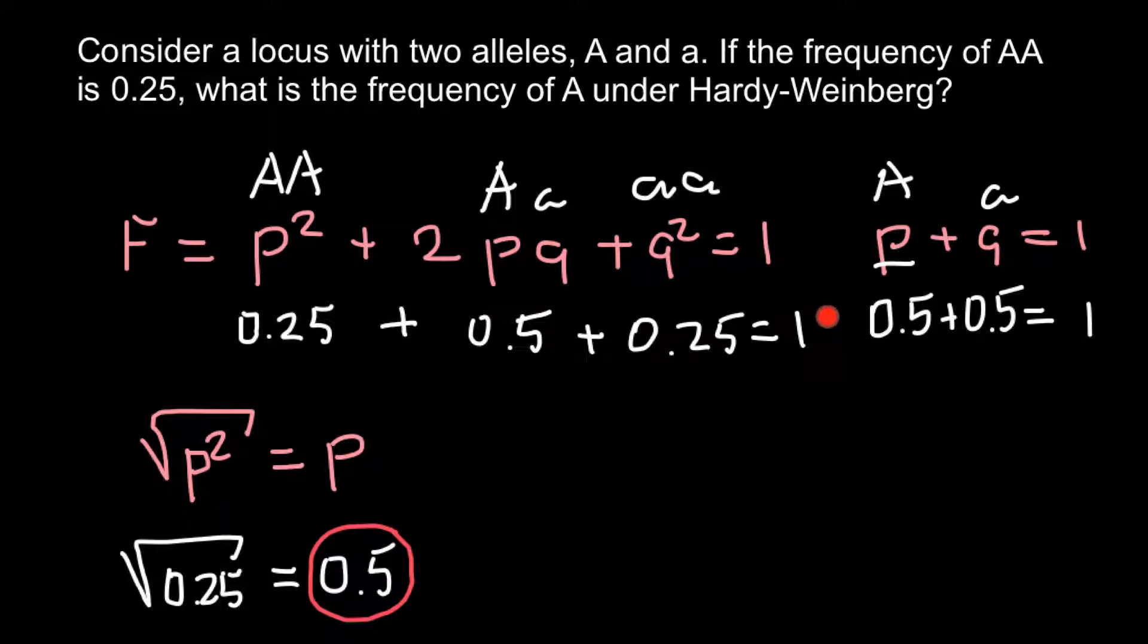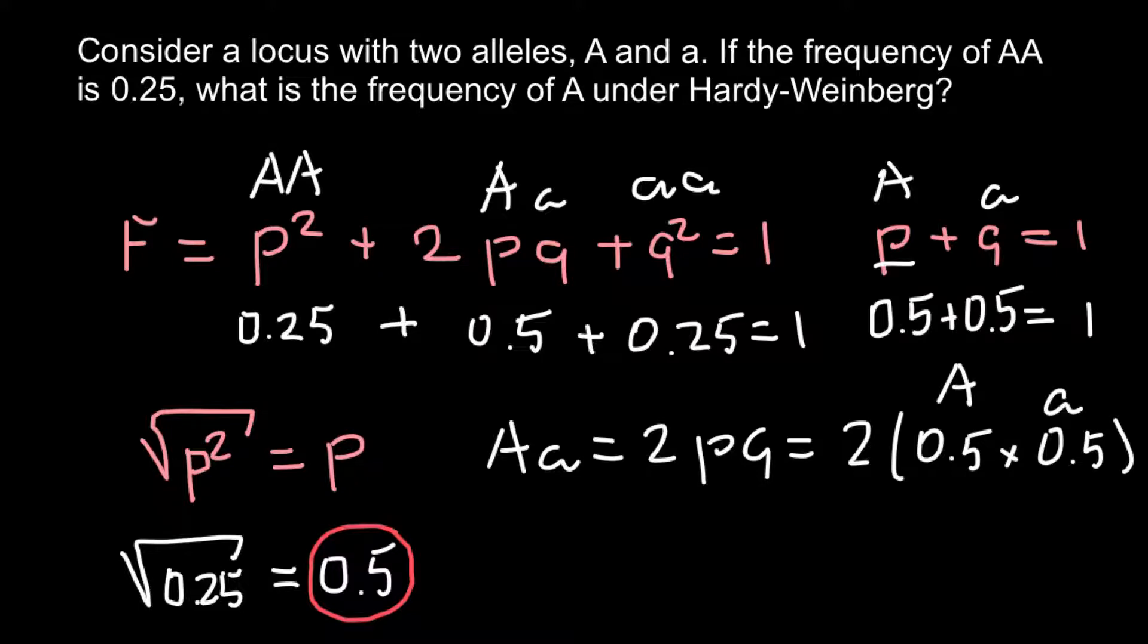Another way to find the heterozygous genotype would be: heterozygous genotype equals 2pq, or 2 multiplied by frequency of p and multiplied by frequency of q. In other words, frequency of the dominant allele A and recessive allele a. And as you see, the answer would be 0.5.